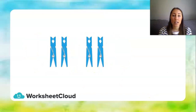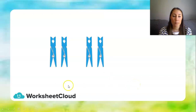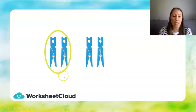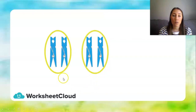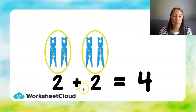Now we're going to make a different grouping. You need 1, 2, 3, 4 pegs in front of you. Daniel is going to make groups of his pegs - putting his counters together in a circle, and then another group of 2 over here. Now we're going to count in 2s: we've got 2, 4. And what did we do when we added them all together? We said we had 2 plus 2.